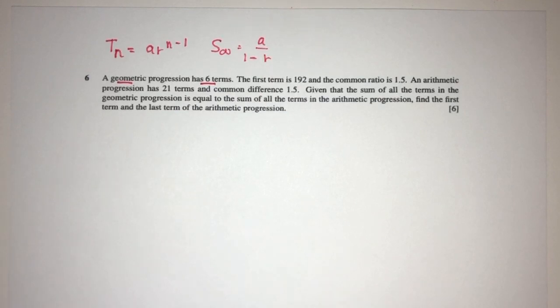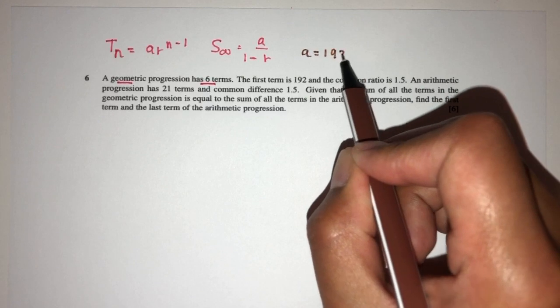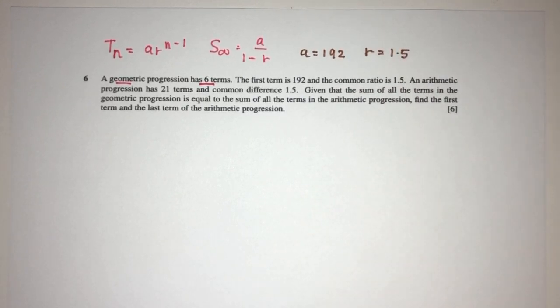That's how we can write it for now. The first term is going to be 192, good to know, and the common ratio is 1.5. These are the given information. Now, we have another progression.